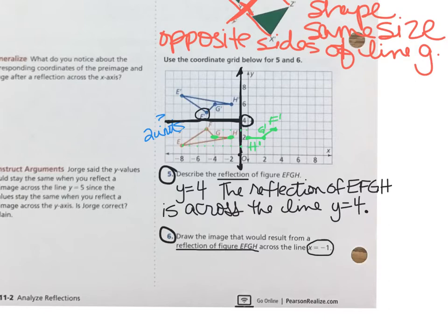1, 2, 3, 4, 5, 6, 7. And that's your point E prime. So F connects there, as does H.